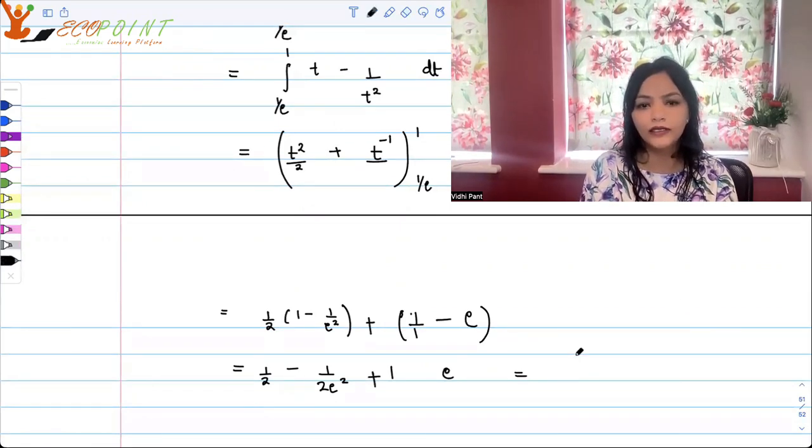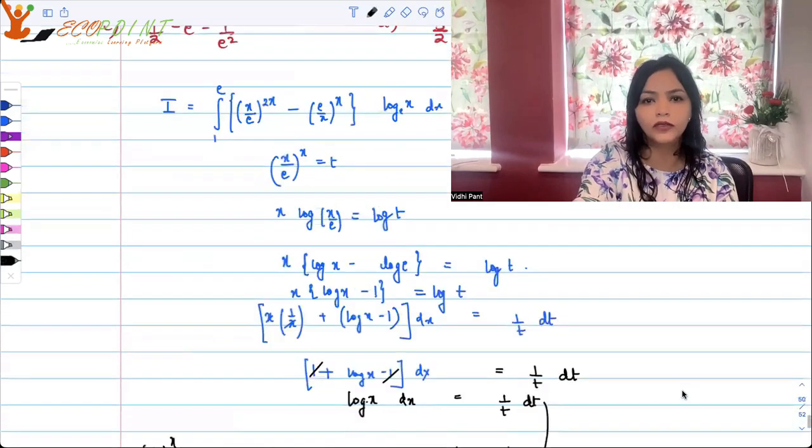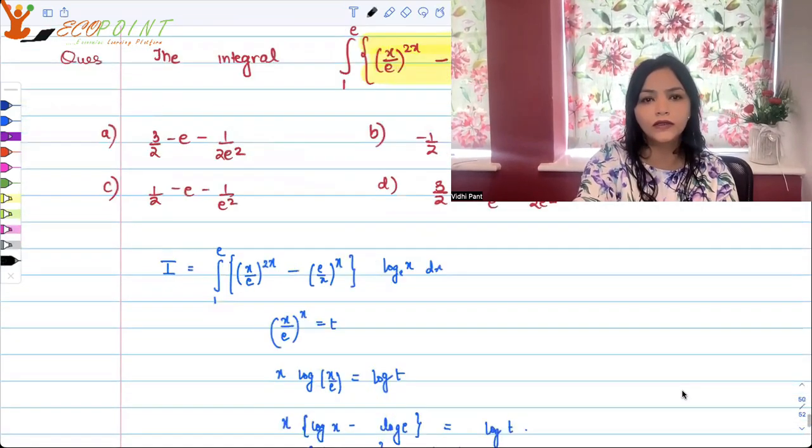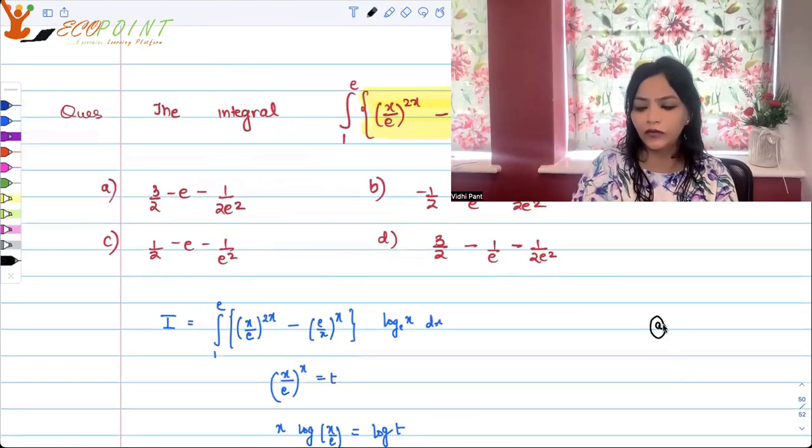And hence what you will get is 3 by 2. Adding this and this, you get 3 by 2 minus, here you have minus, minus e minus 1 by 2 e square. Let's see if we have any option associated to this. Well, the very first option. So a should be the correct option.